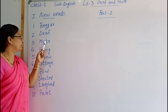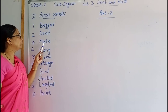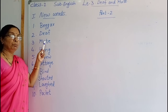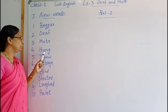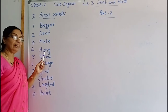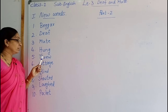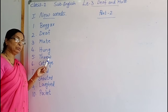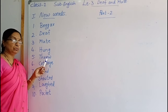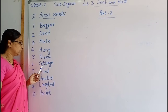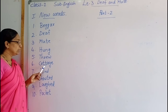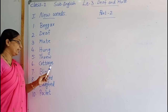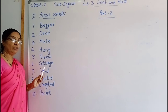Once again children: beggar, deaf, mute, hung, threw. Cottage — C-O-T-T-A-G-E — cottage, cottage.